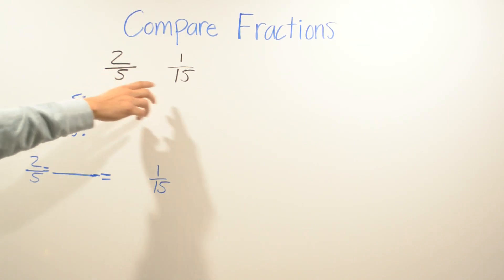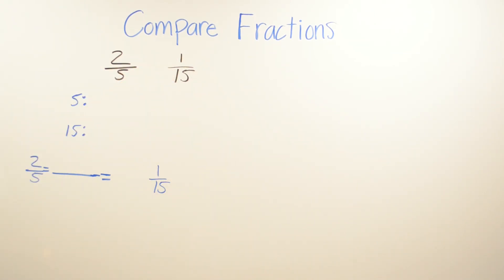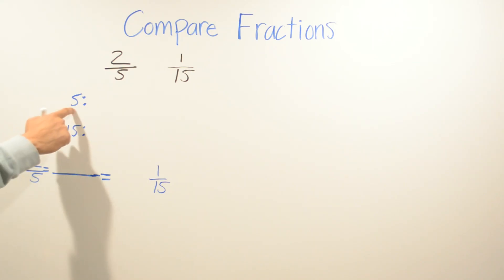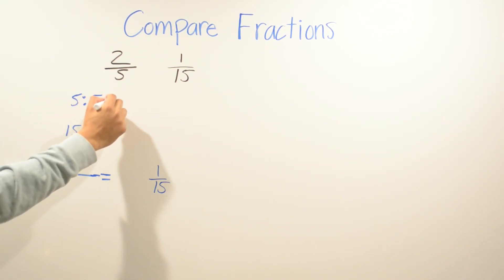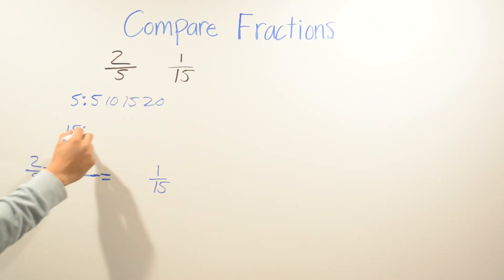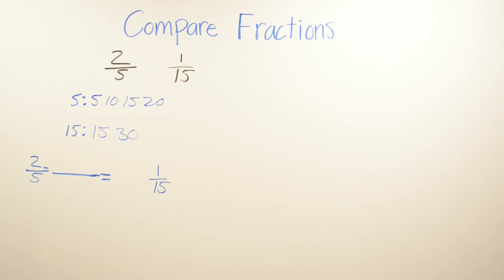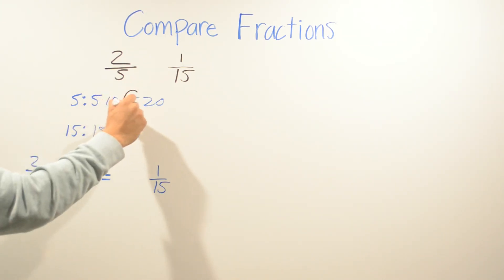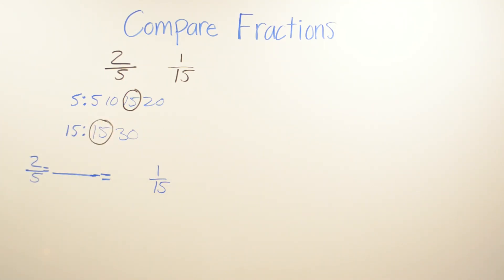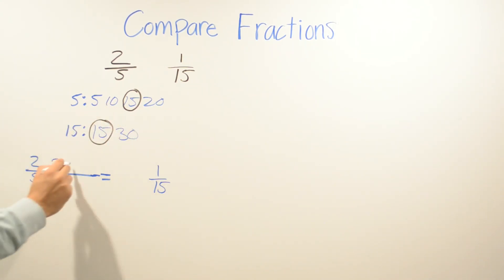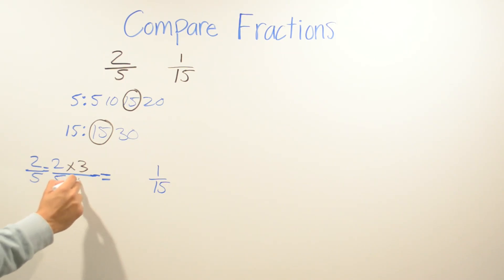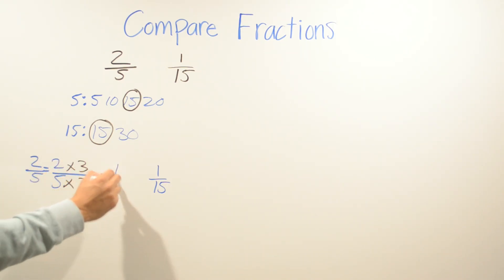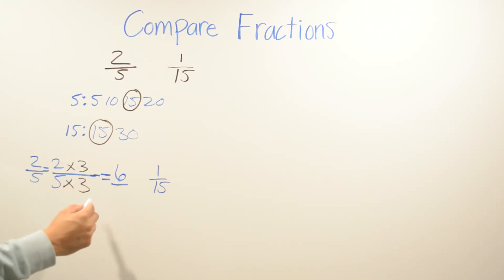In this example we're comparing two fifths and one fifteenth. We find the least common multiple of the denominators. Starting with five: five, ten, fifteen. Starting with fifteen: fifteen. I see fifteen in both lists right away. To get from five to fifteen I multiply by three, so I multiply two fifths by three over three. Two times three is six and five times three is fifteen, giving me six over fifteen.